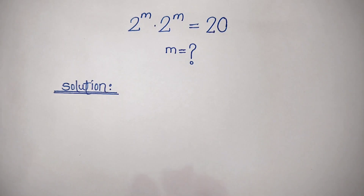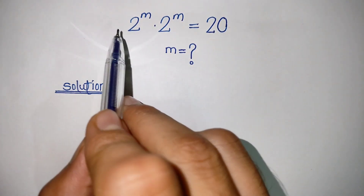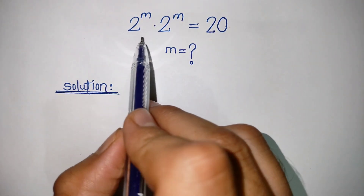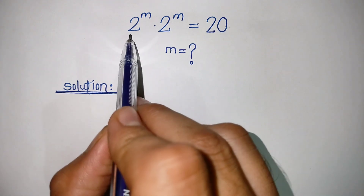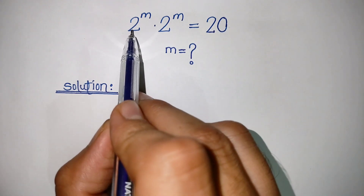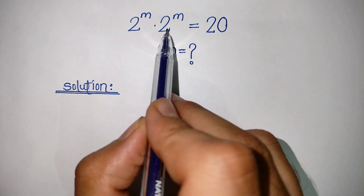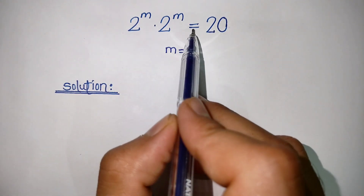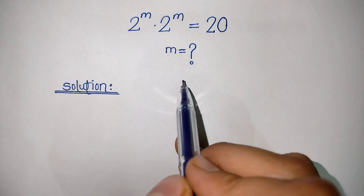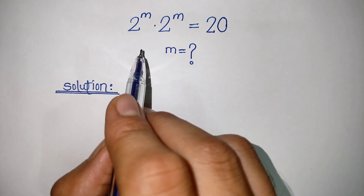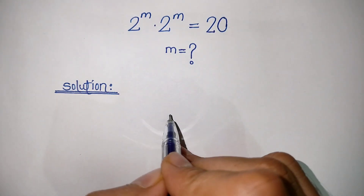Hello everyone. In this video we have to solve this nice exponential math question, which is 2 to the power m times 2 to the power m is equal to 20. We have to find the value of m.